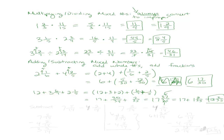Subtracting mixed numbers can be a little tricky. Let's say we want to subtract 7 and 5 over 14 minus 4 and 2 over 14. The easiest thing is to write it vertically. Then just subtract: 7 minus 4 is 3, and 5 minus 2 is 3, giving 3 and 3 over 14. That one's pretty easy.